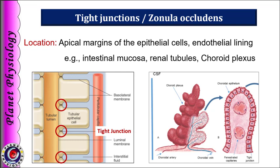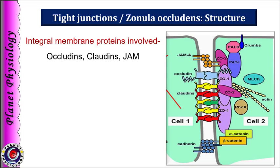Let us begin with the occluding junctions, that is tight junctions, also called zonula occludans. These are mainly found towards the apical margins of epithelial cells as well as endothelial linings — for example, in intestinal mucosa, renal tubular cells, and choroid plexus. The integral membrane proteins occludins, claudins, and junctional adhesion molecules (JAMs) participate in the formation of tight junctions. This diagram represents the formation of tight junctions by various membrane proteins.